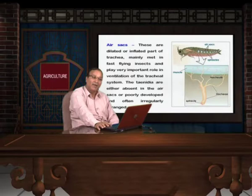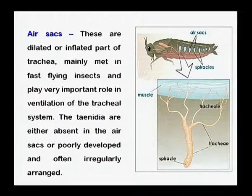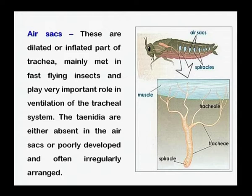In fast-flying insects that need to cover greater distances, sac-like or balloon-like structures have been provided at certain places — particularly close to the wing base and legs — so that more oxygen can be supplied during walking or flying.